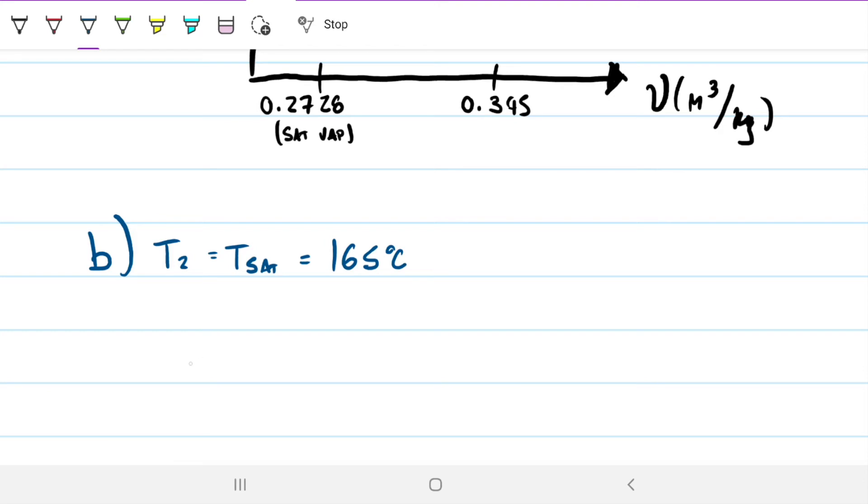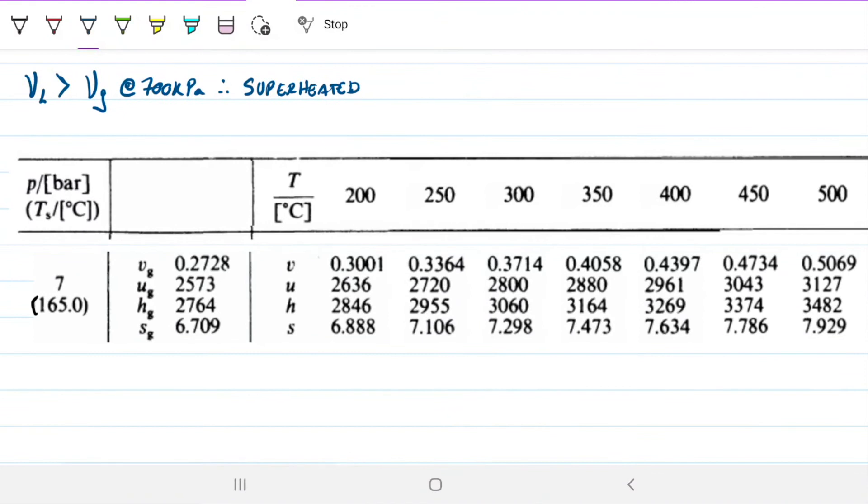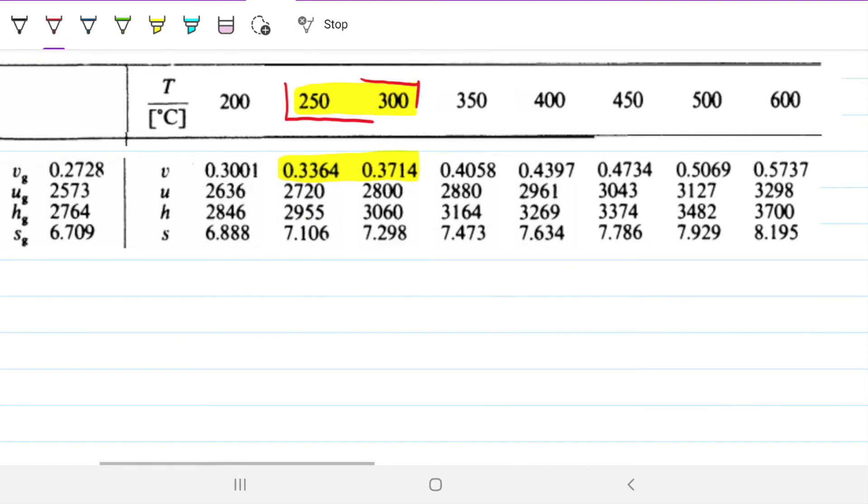But the other thing we know: state one, because my specific volume one is greater than the specific volume for the gas at 700 kilopascals, we know it's a superheated fluid. If it's superheated, then I can look on the superheated table. I'm looking at 7 bar, or 700 kilopascals, and I need to look at a specific volume that equals 0.345. I'm looking here on this line for the 0.345, and it's going to fall between 250 and 300. So my temperature on state one falls between 250 and 300.